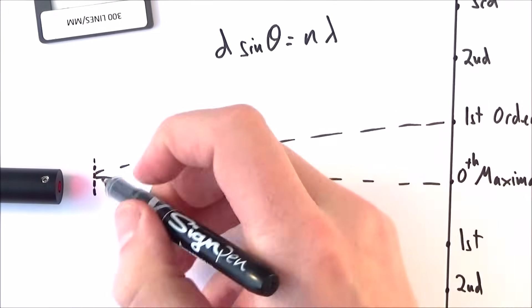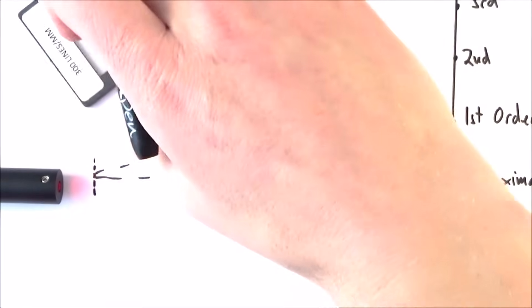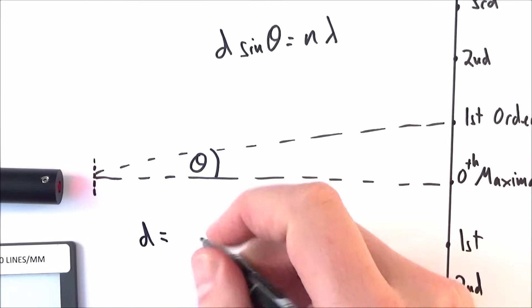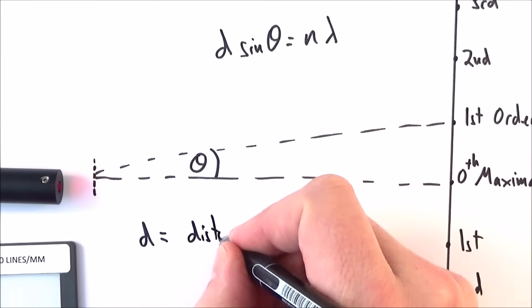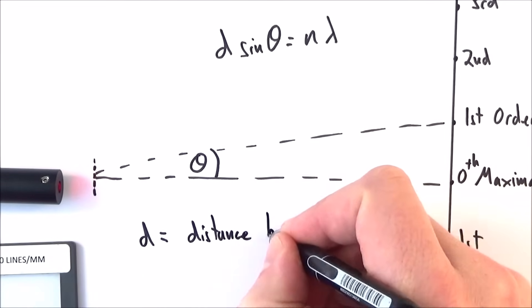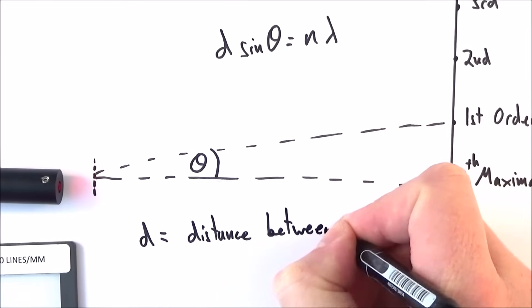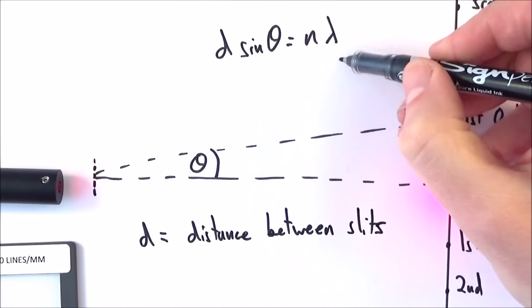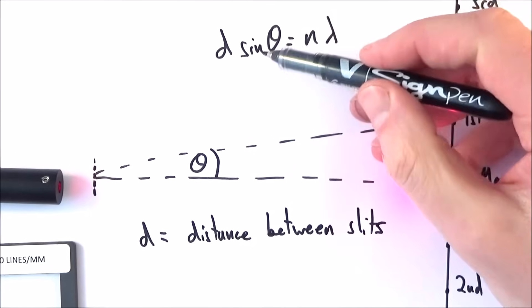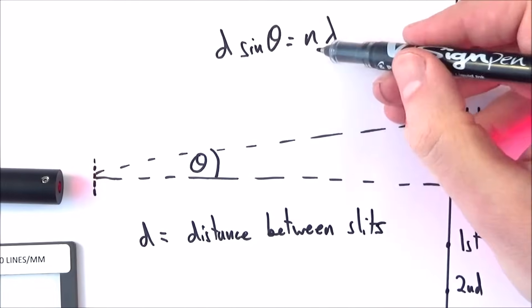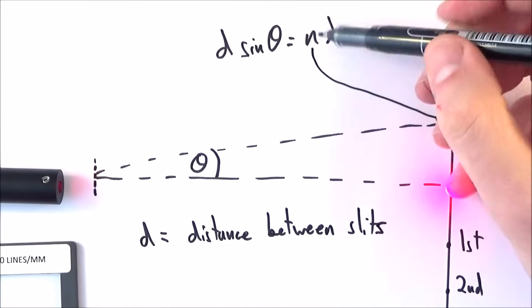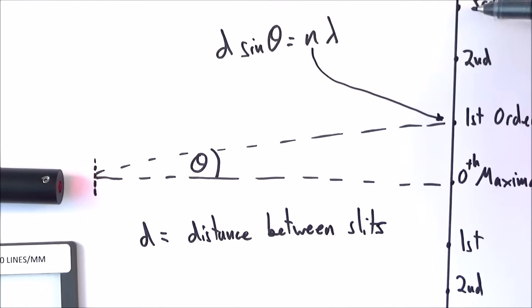On the slide here there are 300 lines per millimeter, so d is equal to the distance between the slits. Lambda is the wavelength of the light, theta is this angle here, and n refers to the order of the maximum. We might have n equals 1, n equals 2, or n equals 3, and so on.